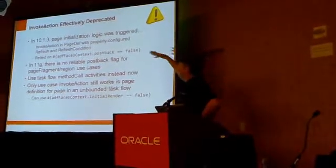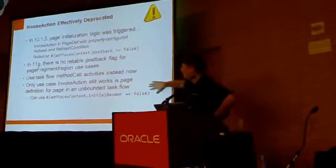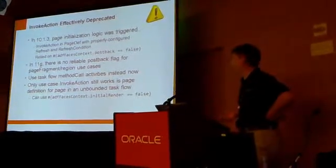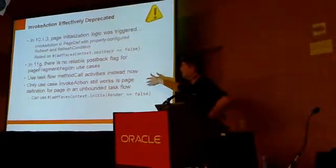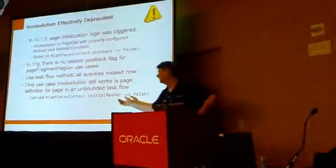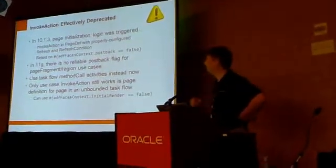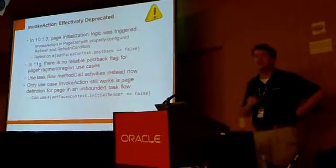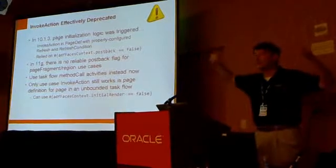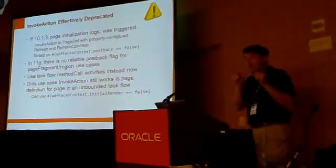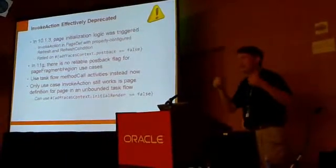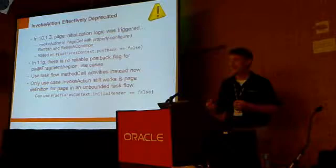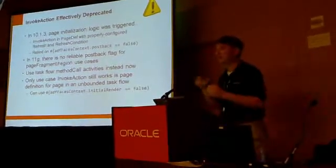You basically never use invoke action in 11G, except in an unbounded task flow where you don't have the ability to invoke a method call activity before rendering the page. There you can still use invoke action with a new property called initial render. Many performance problems I've debugged came from invoke actions calling execute query on every single click — clicking a row, reordering a column, every server trip was saying 'please re-execute the query.' Using the method call activity, it only happens when you route through that activity.